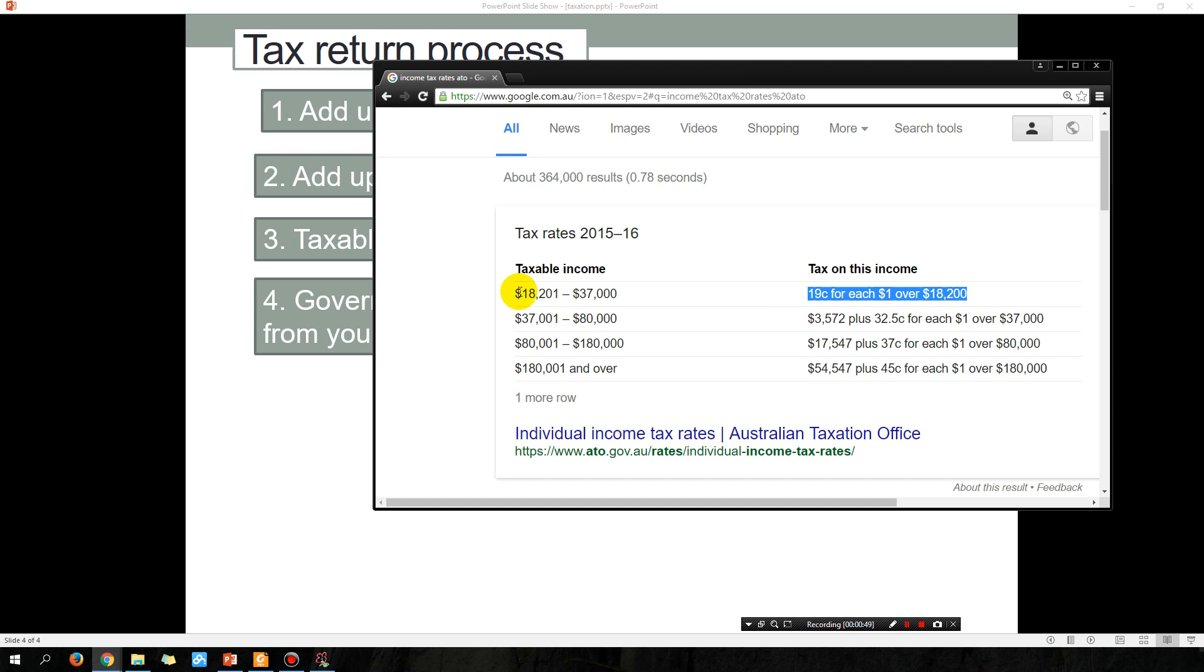So if your taxable income is between $18,000 to $37,000, then the tax you have to pay is 19 cents for each dollar you earn over $18,200.